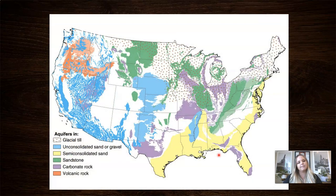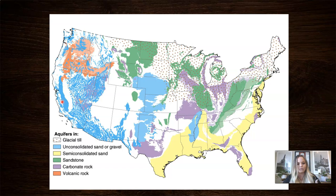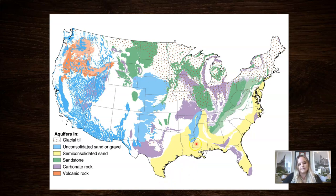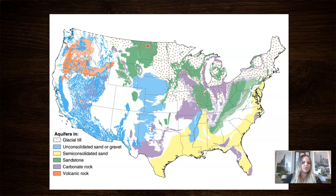Not everywhere has the same type of aquifer. Here in the Central Valley, our aquifer looks like unconsolidated sand and gravel, which is good because if it were cemented into sandstone or conglomerate, it wouldn't hold as much water. In Oregon and Washington, there's a lot of volcanic rock, which is not as porous, so they rely more on surface water. Down in the south and east there's semi-consolidated sand, relying on minimal pore spaces between grains. In the northeast there's glacial till — all the material left behind by a glacier, a mixture of different materials and sizes.